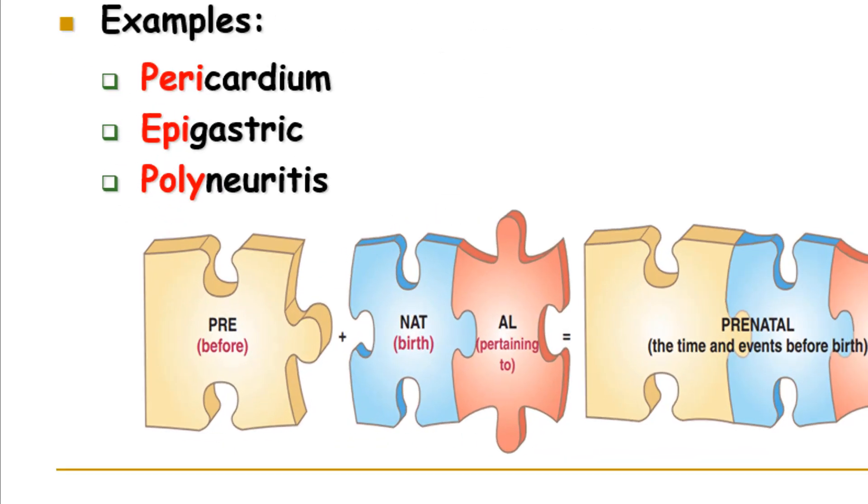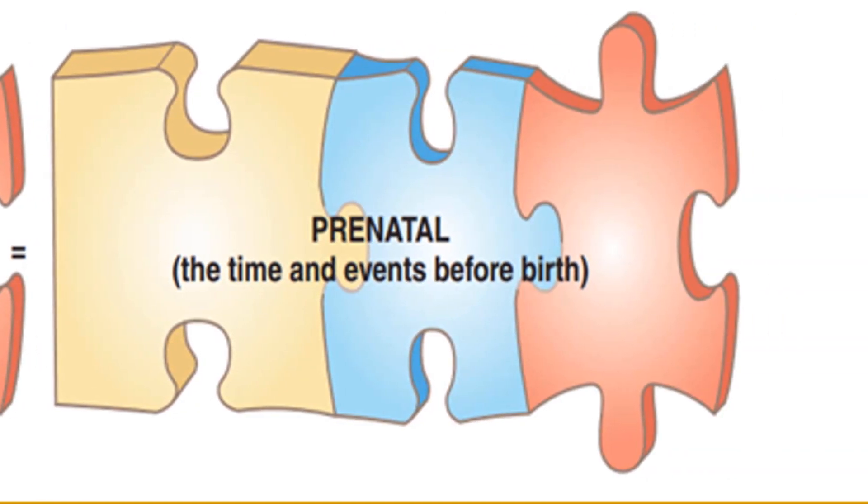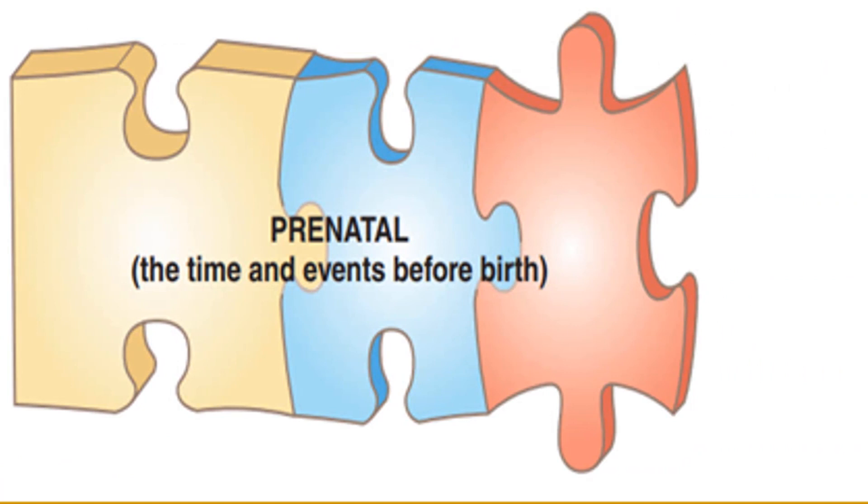Here in this example, we have prenatal. Pre means before, nat means birth, al pertaining to. So if you combine them together, prenatal means the time and events took place before birth.